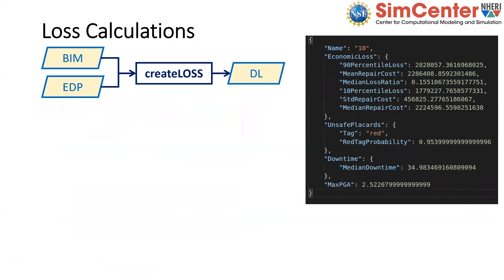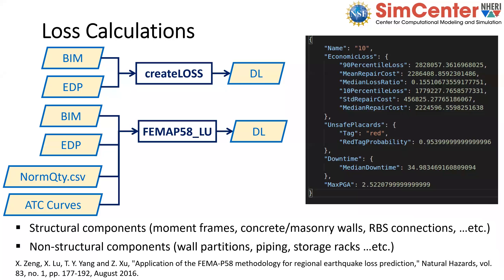The final step in the building workflow is damage and loss assessment. Given the BIM and the evaluated EDPs, we use the FEMA P58 procedure to estimate damage, consequences, losses, downtime, red tag probability, repair cost, and loss ratio. The registered application was also provided by Professor Lu's group and takes as input the ATC curves and files defining normative quantities for structural and non-structural components.